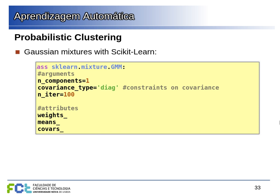In scikit-learn, you can use the GMM class for Gaussian mixture models, specifying the number of components and the type of covariance restrictions. The covariance matrix determines the shape of the Gaussian in feature space; restricting it to diagonal means the Gaussian can only scale along each axis without rotation. You can leave it on the default diagonal setting unless you need to fine-tune. The model attributes include the weights, means, and covariance matrices for each distribution, with the usual fit and transform methods.